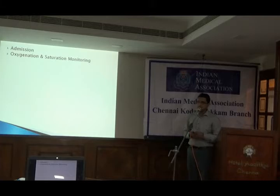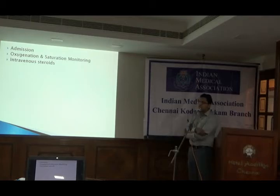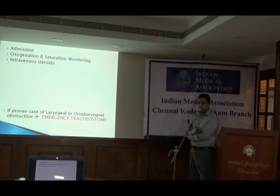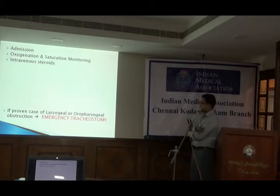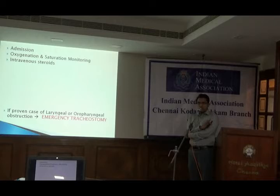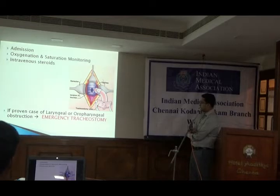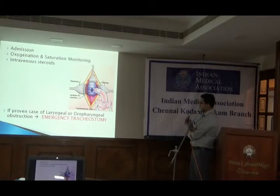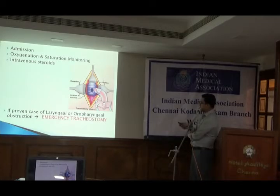We put the patient on oxygen and monitor the saturation. Initially we start high-dose steroids and wait to see whether the patient improves. But in many cases of proven obstruction within the laryngeal framework, like in CA larynx, we may have to do an emergency tracheostomy. Tracheostomy normally takes 20 to 25 minutes, but in an emergency we have to do it within 5 minutes — making a hole in the trachea and passing the tracheostomy tube to bypass the obstruction above.